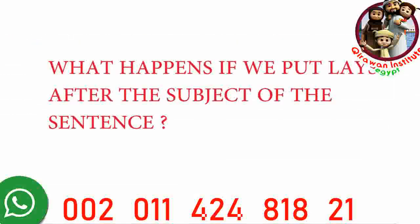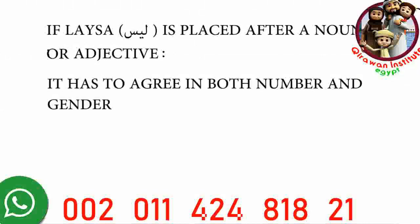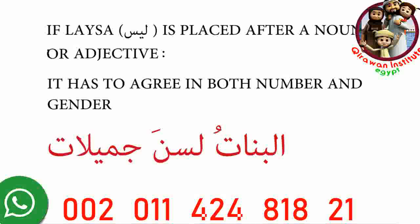Now let's examine what happens if we put leysa after the subject of the sentence. If we put leysa after a noun or adjective that's the subject, it has to agree in both number and gender. For example, elbinatu lessna jamilatin — instead of using leysit as before, now we have to use lesna, conjugated for both feminine gender and plural number. Putting the subject first complicates the situation and requires that you know all of the conjugation forms learned previously.